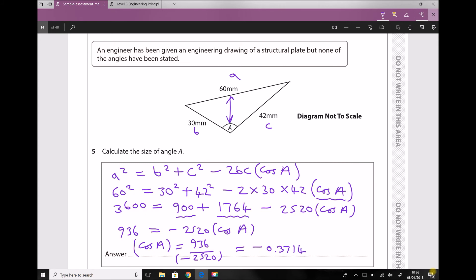There's a couple of things to be careful of here. First, we need to make sure our calculators are in degrees and not in radians. The other thing I'd advise you to do is keep your full calculator display at this stage. So although I've written minus 0.3714, my calculator display shows minus 0.371428571, and I'm going to leave that in my display.